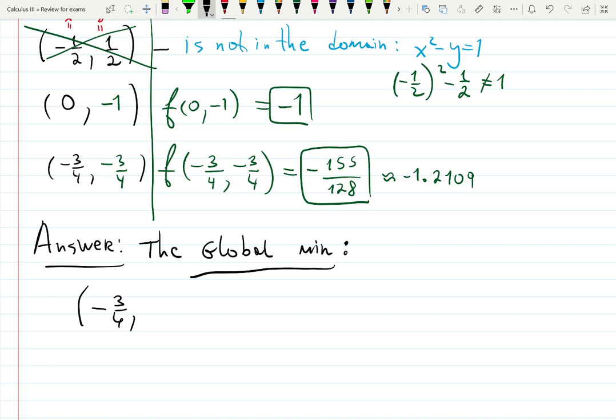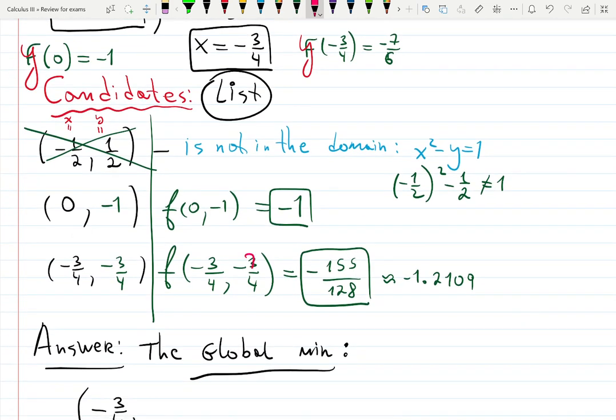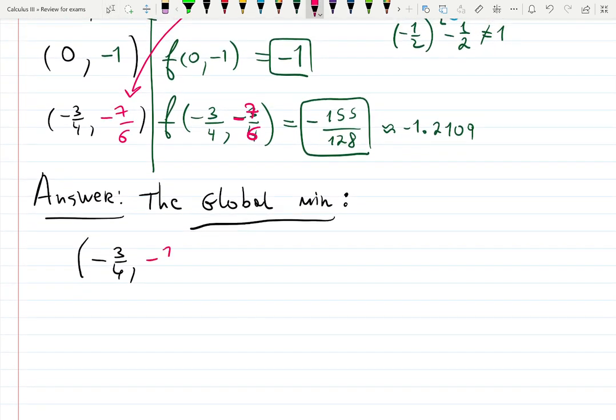I just realized there's a typo when this should be minus seven sixths. So if you caught it earlier, good job. This fixes it minus seven over six. I brought it correctly over here surprisingly. It's my x comma y comma, let's put purple z, and the output is minus 155 over 128. Always keep the exact answer because that's more professional.